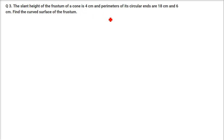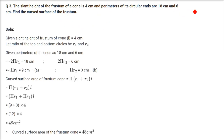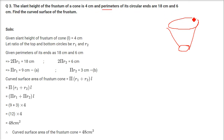The slant height of the frustum of a cone is 4 cm, and the perimeters of its circular ends are 18 and 6. Find the curved surface area. The slant height L is given. The perimeter means circumference, so 2πr1 = 18, meaning πr1 = 9.